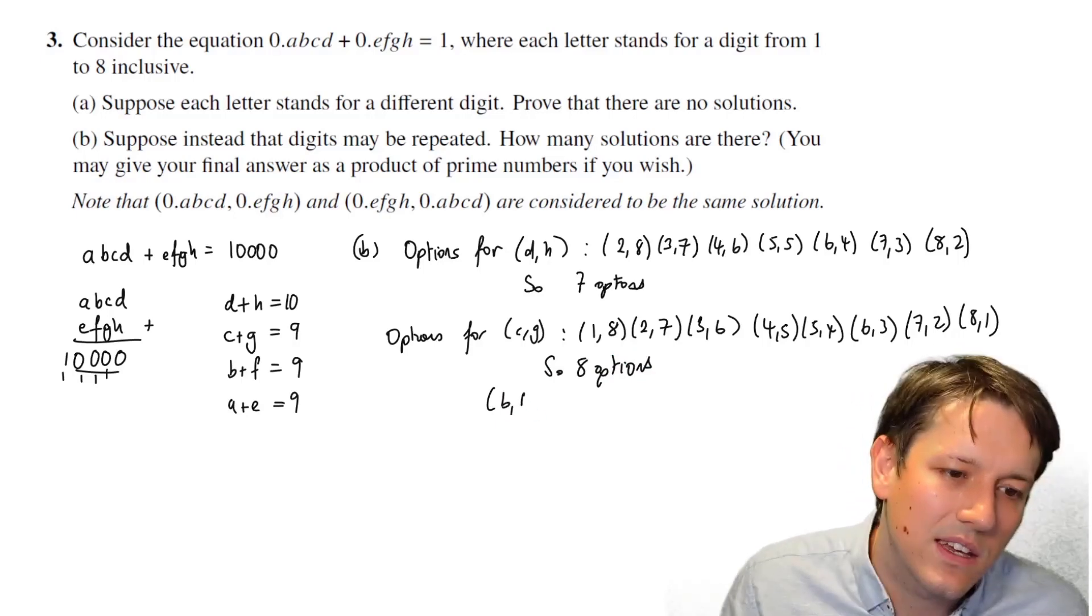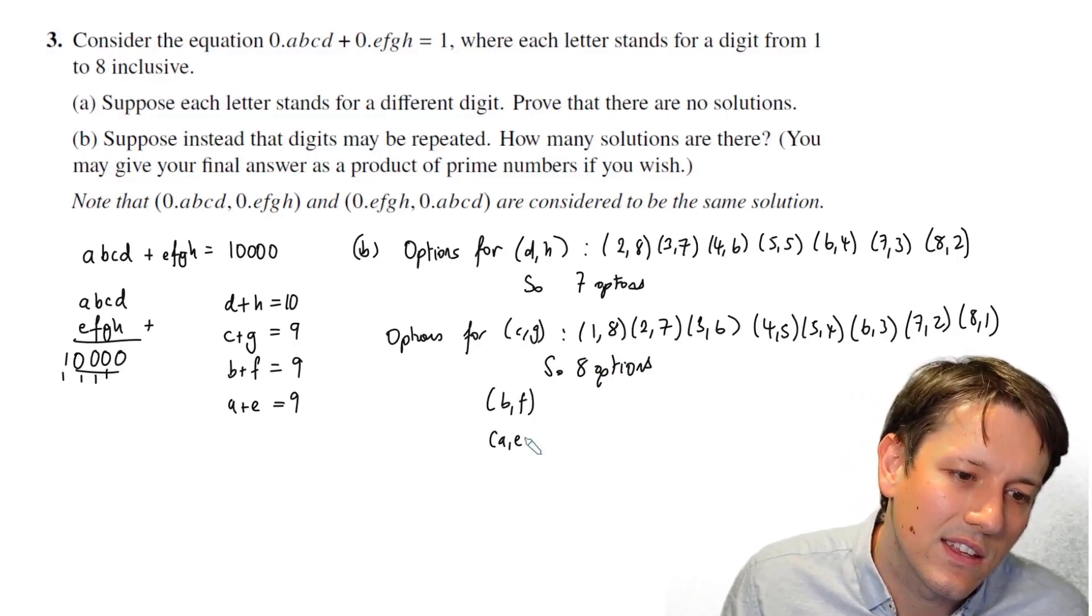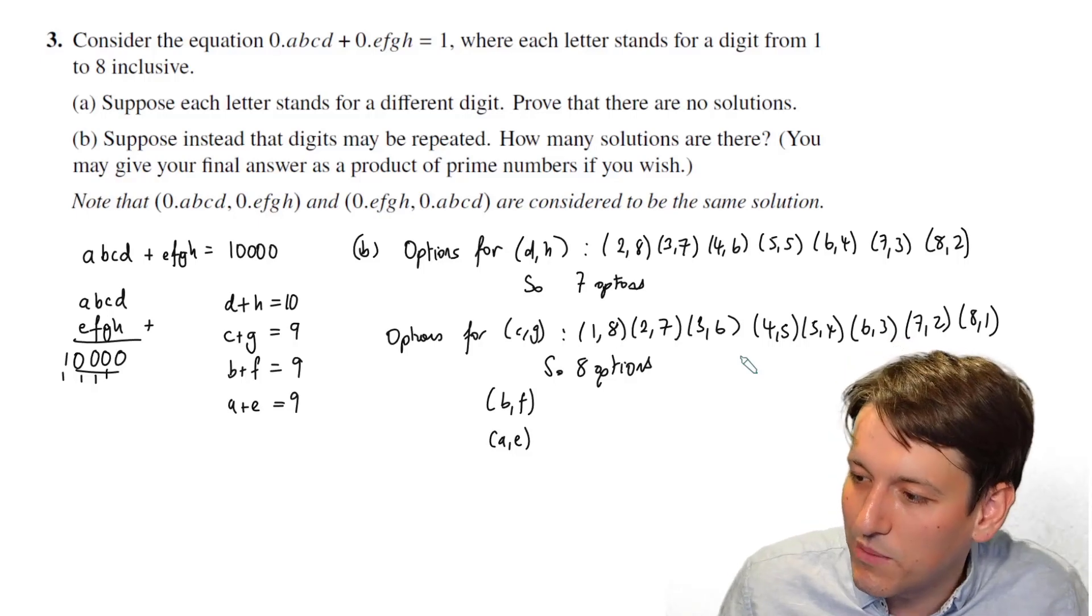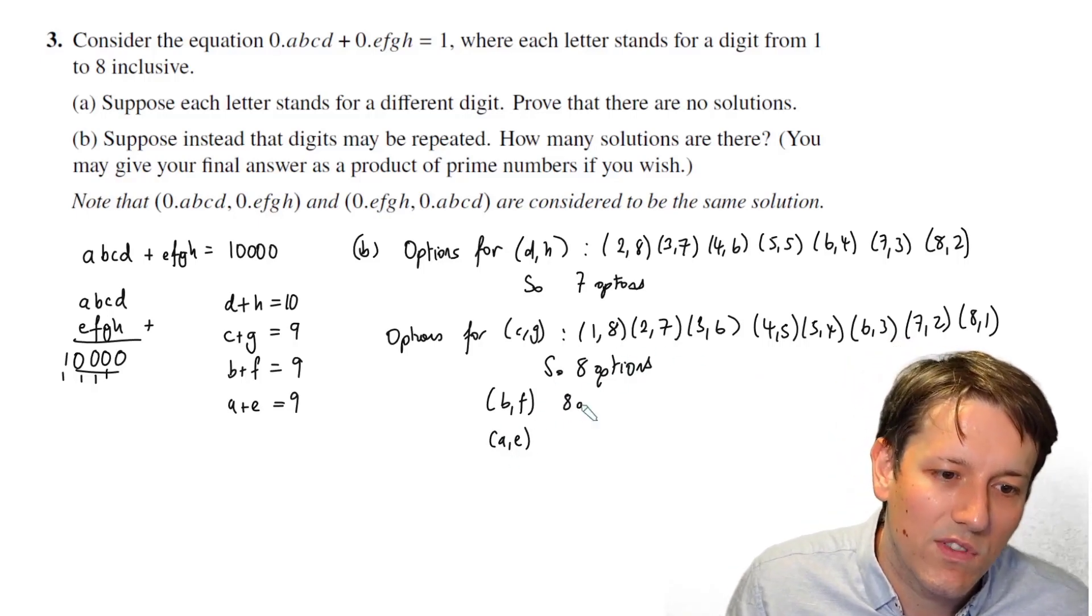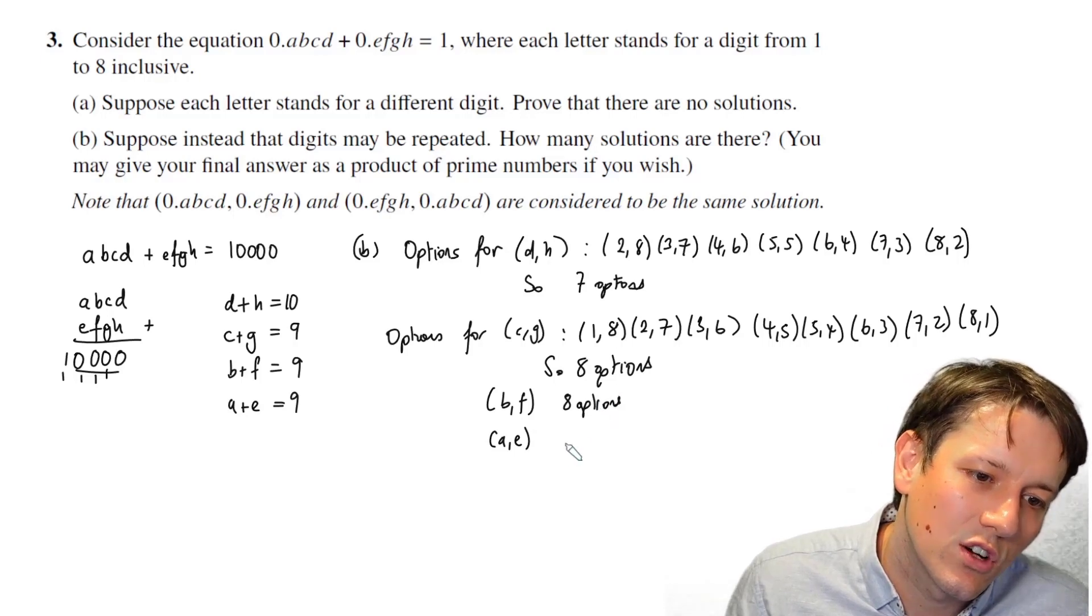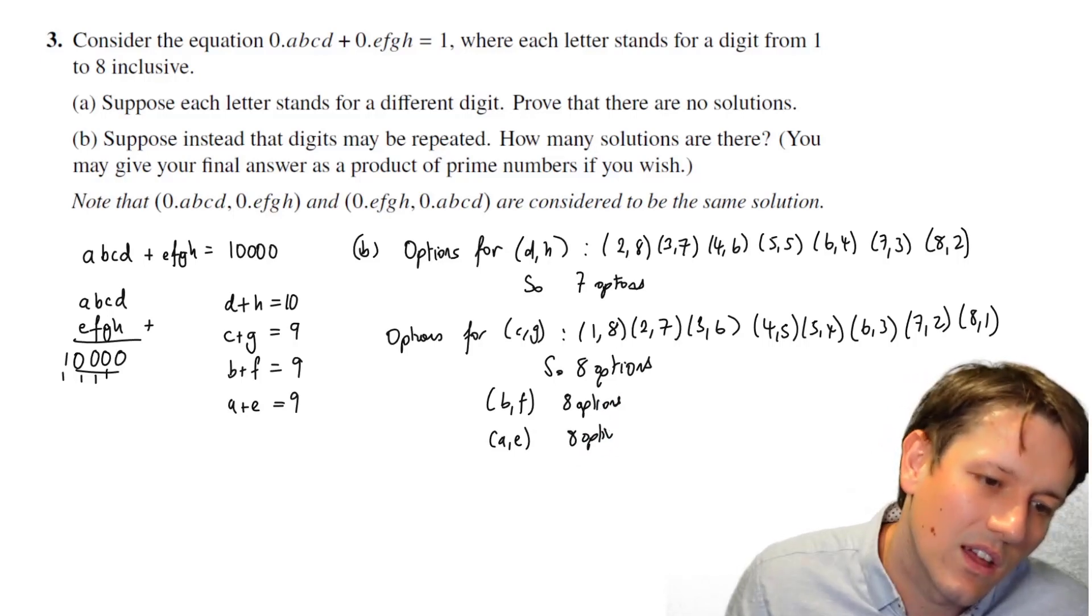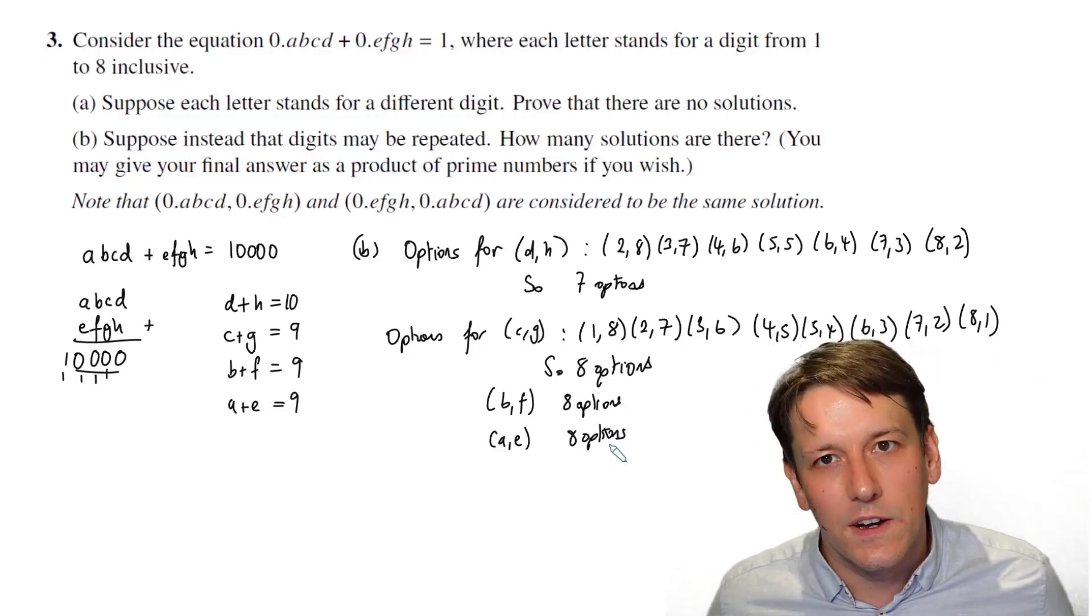And then similarly, for B and F and for A and E, it's exactly the same. I'm allowed to repeat the numbers if I want to. So again, we've got 8 options and we've got 8 options here.